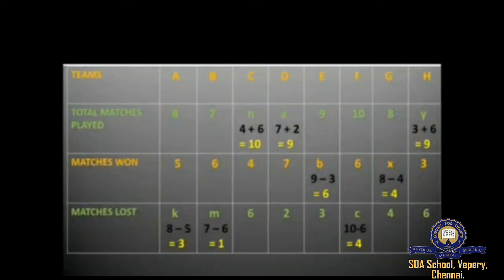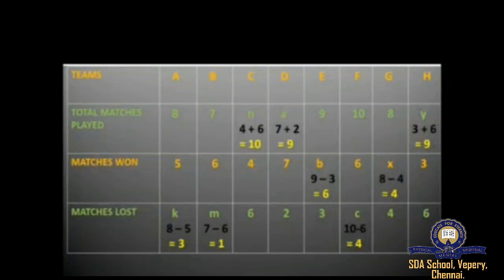Team H won 3 matches and lost 6, so total played = 3 + 6 = 9. To summarize the trick: if you want to find matches won or lost, subtract the known value from the total; if you want to find the total matches played, add the matches won and matches lost.